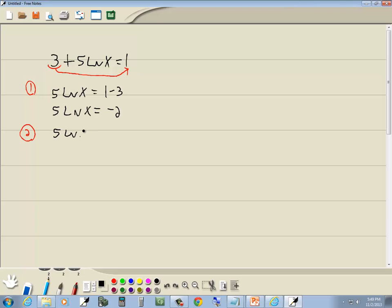When I do that, 5 is going to cancel. And we've got natural log of x is equal to negative 2 fifths.